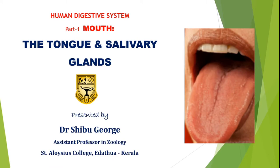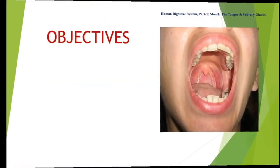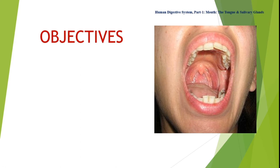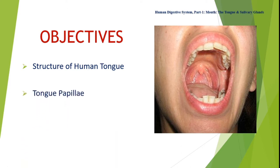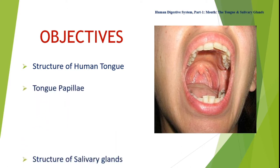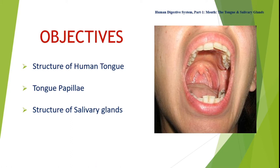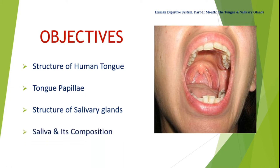Dear students, welcome to the online class on Human Digestive System, Part 1: Mouth, the Tongue and Salivary Glands. In this video, we learn about the Structure of Human Tongue, Tongue Papillae, Structure of Salivary Glands, Saliva and its composition.